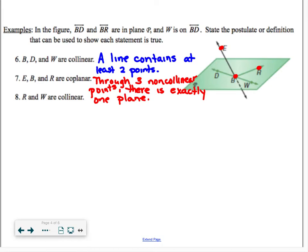And for the last one, it says points R and W are collinear. Again, if you look at the picture, it doesn't appear as though R and W sit on the same line. But we know that through any two points, we can create a line. There exists a line. And that was the first postulate. So number eight can be justified by saying through any two points, there is exactly one line.